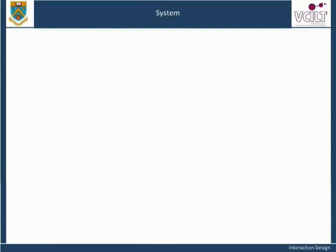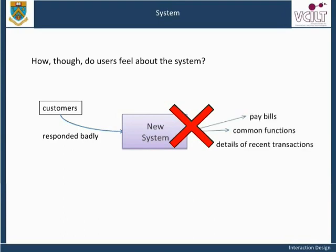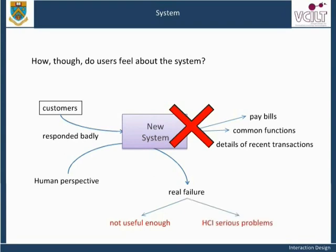The new banking system described is clearly a success from a technical point of view. The designers have thought about the technical demands of the system — for example, high throughput of database queries. However, how do users feel about the system? The bank's customers have responded badly. They want to know why the system does not allow them to hear details of their most recent transactions, pay bills, and do other common functions. From a human perspective, the system is a real failure. It fails because it is not as useful as it might be and has very serious HCI problems — the designers have not fully considered what would be useful and usable from the customer's point of view.